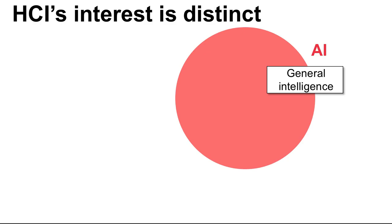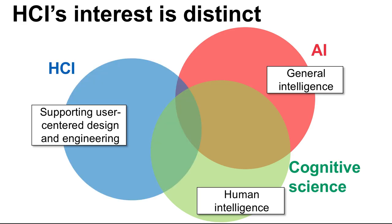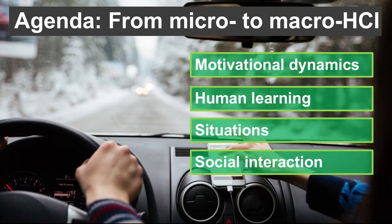To summarize, HCI has a distinct interest in computational rationality. While AI research studies it as a general theory of intelligence and cognitive science as a theory of human intelligence, in HCI we are interested in its potential to inform the design of better UIs. However, to make the approach more broadly accessible and relevant — using Ben Shneiderman's term — we need to expand it from micro-HCI to macro-HCI, touching topics like computer-mediated communication, interactive AI, and ubiquitous computing. Several outstanding theoretical challenges remain, such as how to model human motivation, learning situations, or social interactions.